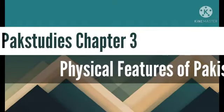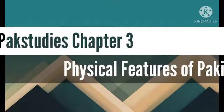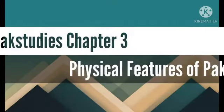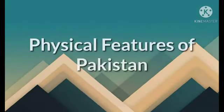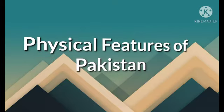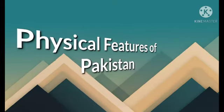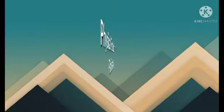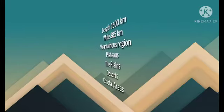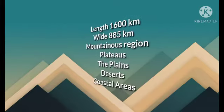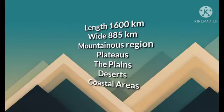Before going into the diversity of the physical features, let's have a look at the total area of Pakistan. Pakistan approximately covers an area of 796,096 square kilometers. It has a total length of 1,600 kilometers and a width of 885 kilometers, which gives a lot of diversity to the physical features of Pakistan.